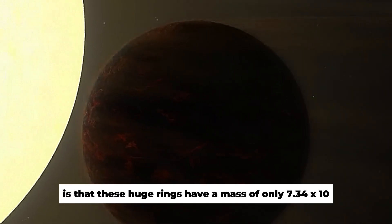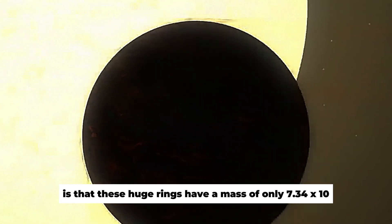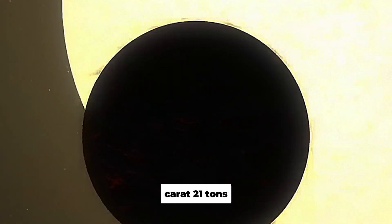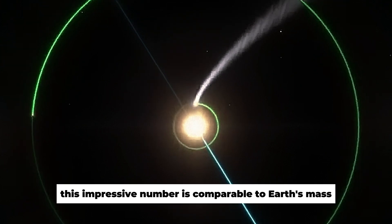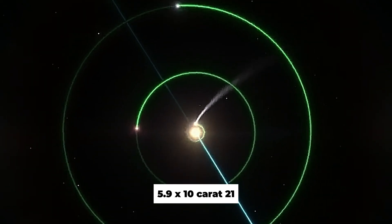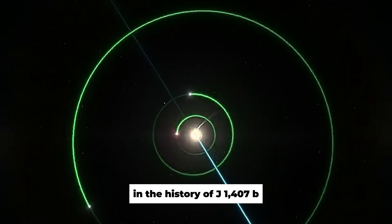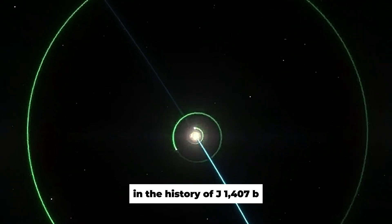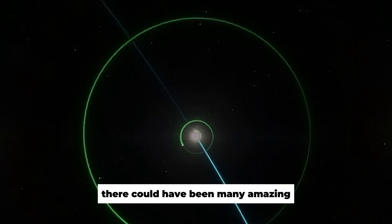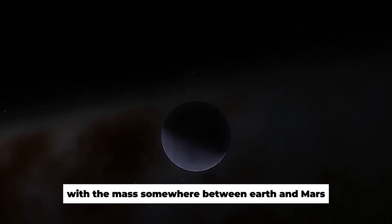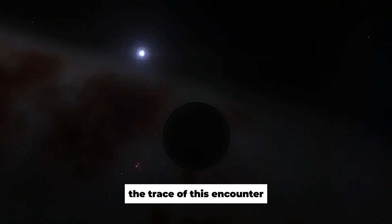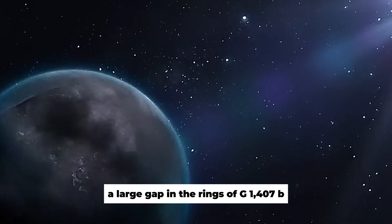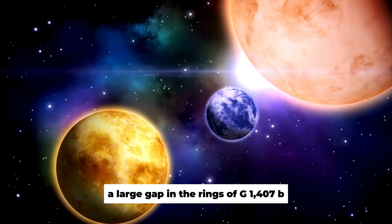What's amazing is that these huge rings have a mass of only 7.34 x 10^21 tons. While only, this impressive number is comparable to Earth's mass, 5.9 x 10^21. In the history of J-1407b, there could have been many amazing and frightening events, and one of them could have been a collision with a satellite with a mass somewhere between Earth and Mars. The trace of this encounter, a large gap in the rings of J-1407b.